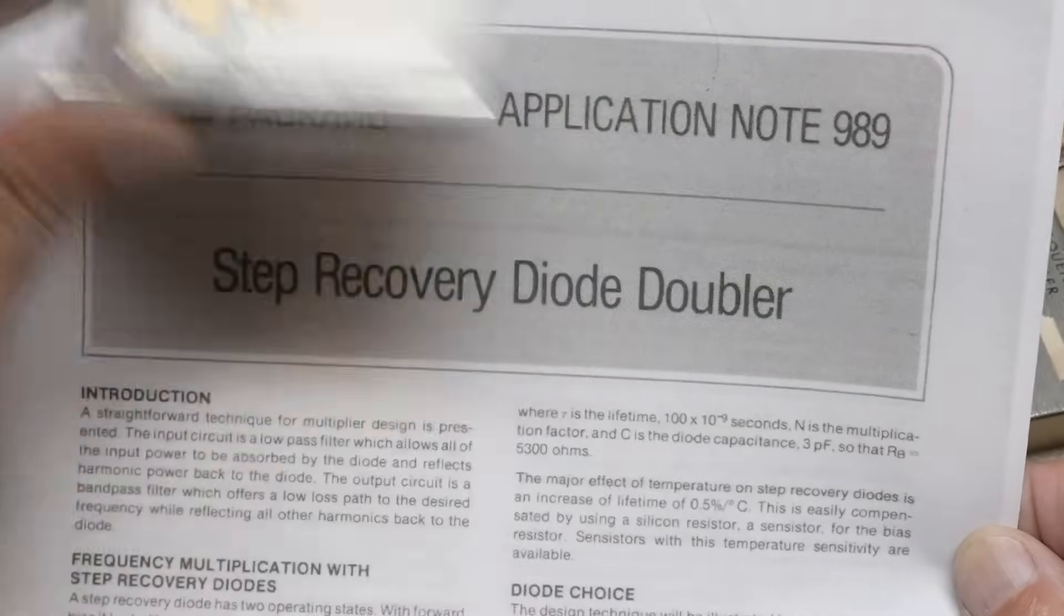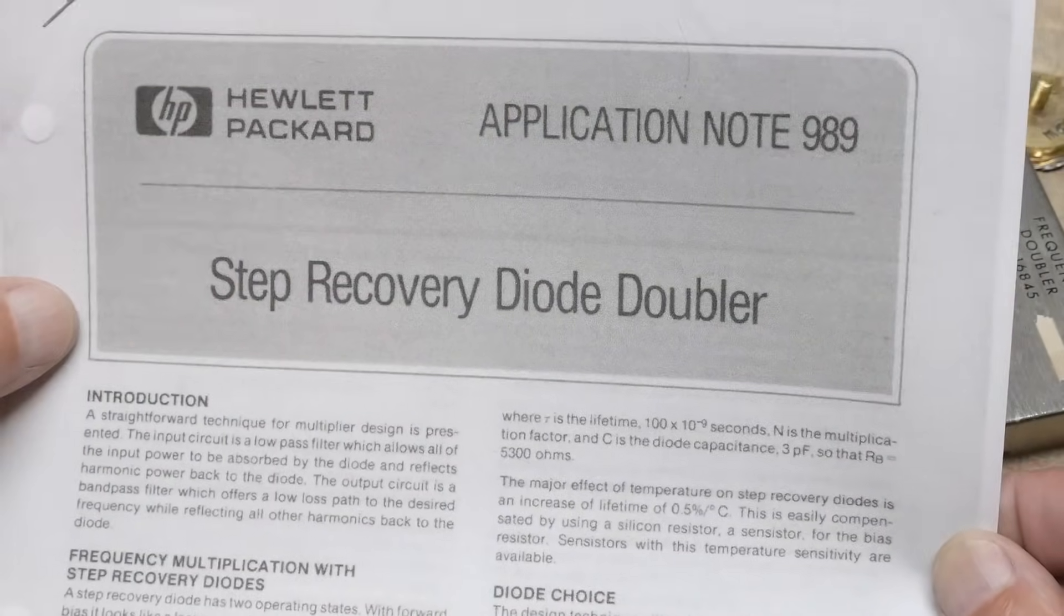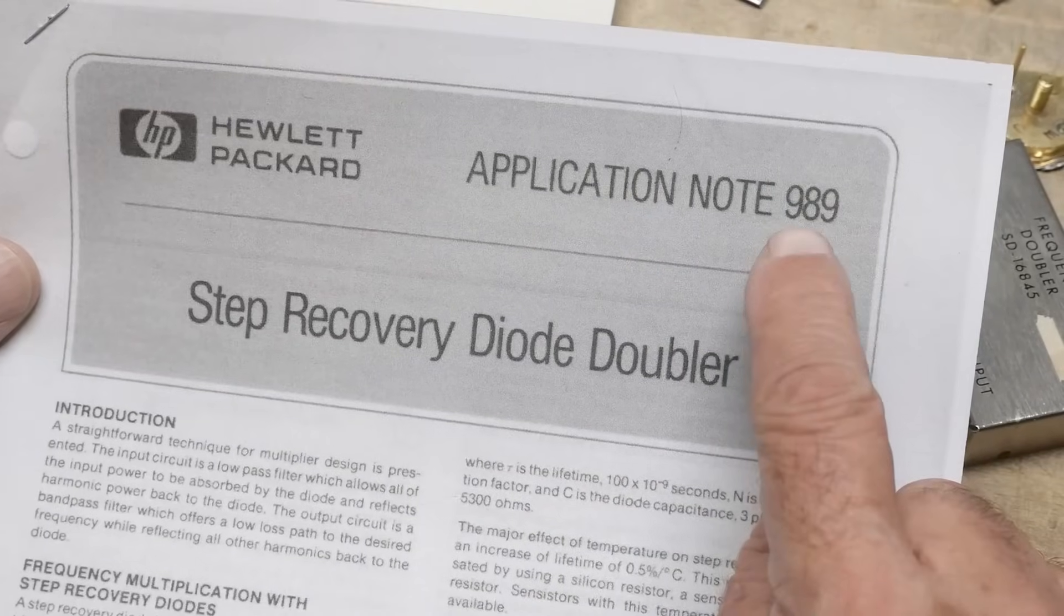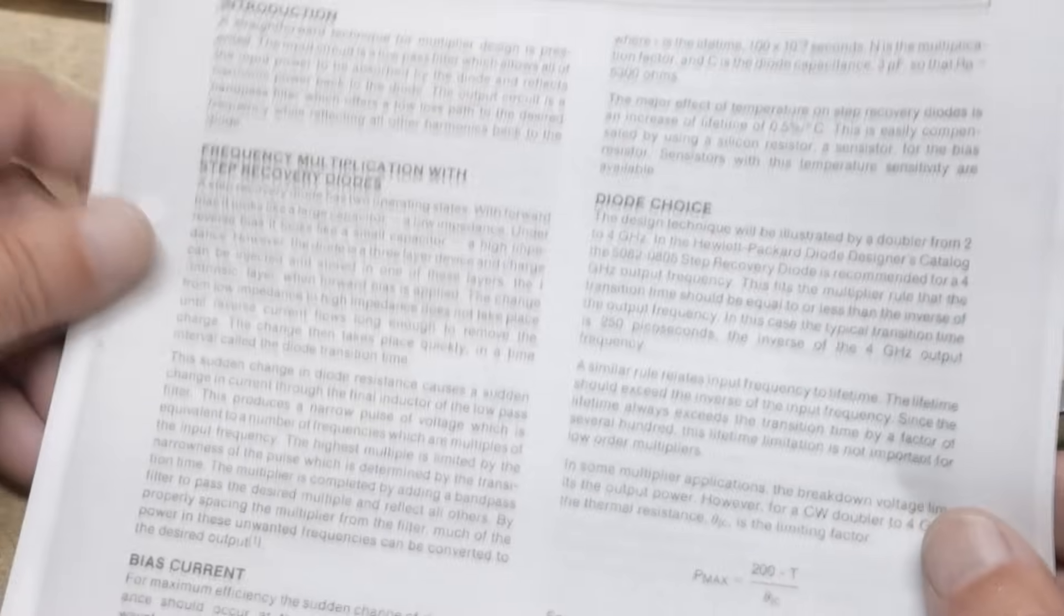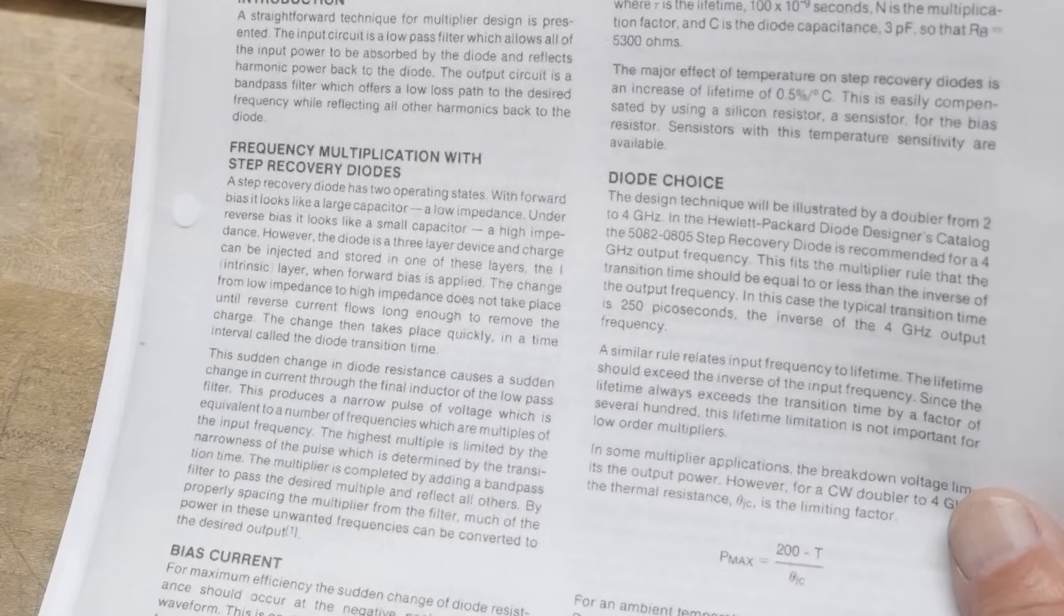This thing is a step recovery diode, and application 989 tells you how the thing works. Talks about how the doubling works.